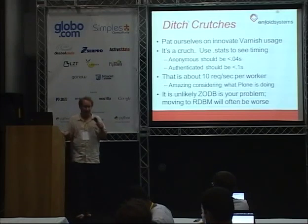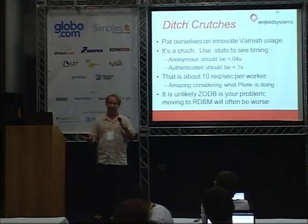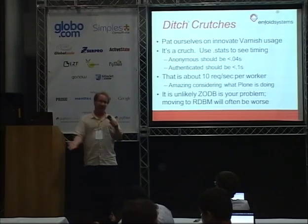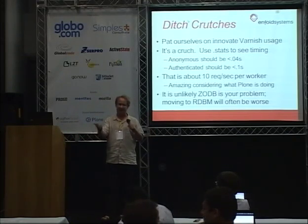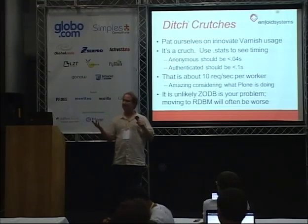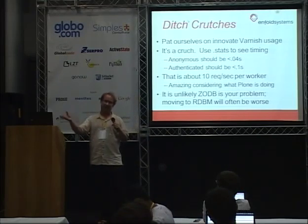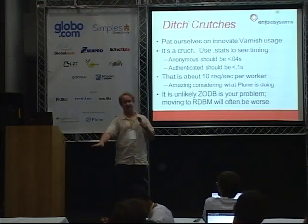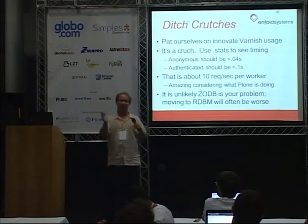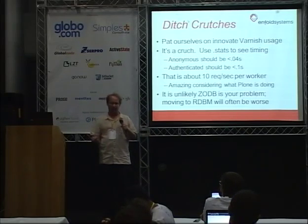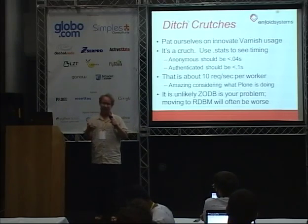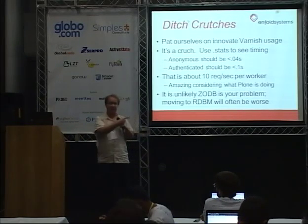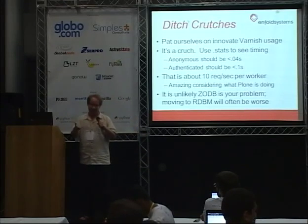What this really means is that you can only handle about 10 requests per second inside the workers. You typically have one worker per core — four cores gives you 40 requests per second. Your Varnish system caches static assets, or you use our WSGI static middleware that intercepts responses and caches them on the file system, serving static assets through WSGI to reduce what Zope has to do.